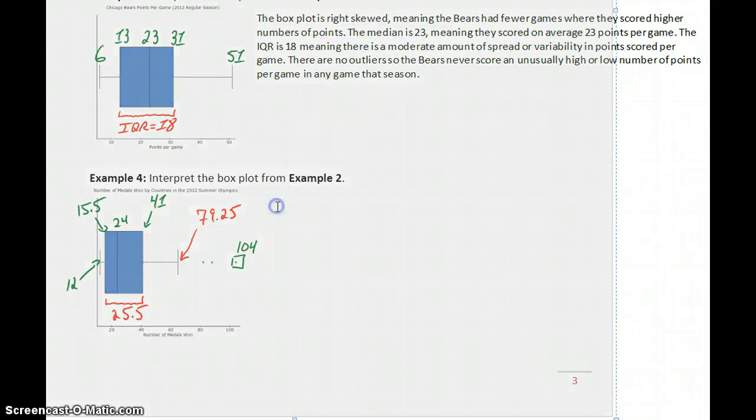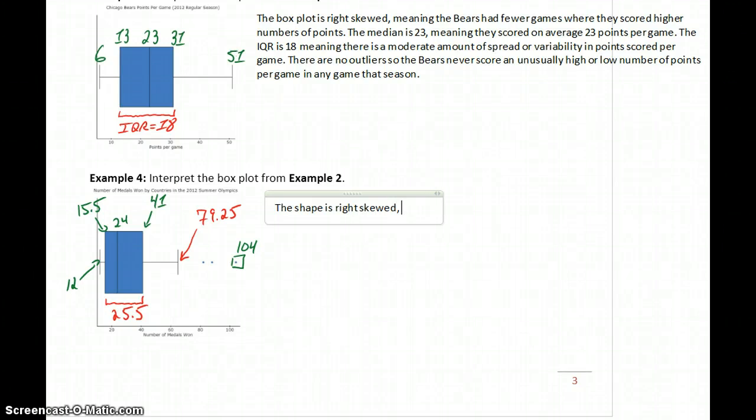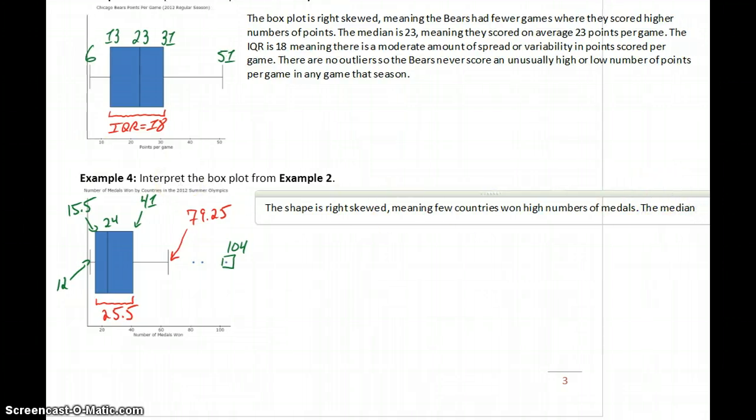For our box plot that we generated in Example 2, we can look at doing the exact same thing. We want to interpret this box plot. The shape is right-skewed, meaning few countries won high numbers of medals. The median is 24, meaning countries won on average 24 medals, or meaning countries typically earn 24 medals.